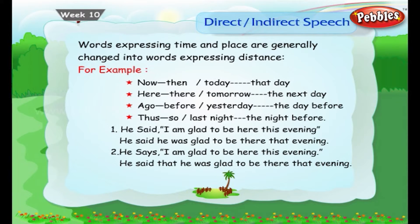Words expressing time and place are generally changed into words expressing distance. For example: 'now' becomes 'then', 'here' becomes 'there', 'ago' becomes 'before', 'thus' becomes 'so', 'today' becomes 'that day', 'tomorrow' becomes 'the next day', 'yesterday' becomes 'the day before', 'last night' becomes 'the night before'. Example — He said, 'I am glad to be here this evening.' Indirect: He said he was glad to be there that evening.